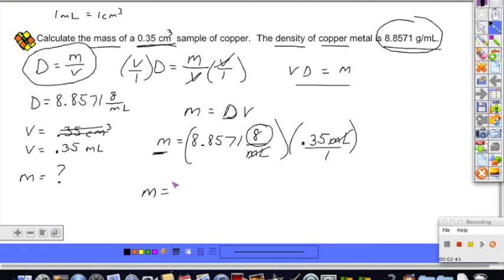So after multiplying through on your calculator, 8.8571 times 0.35, you should get an answer of 3.099985 grams. Well, if you go back and review significant figure rules, we should round our answer to two significant figures, and we'll end up with an answer of 3.1 grams for the mass of this sample of copper.